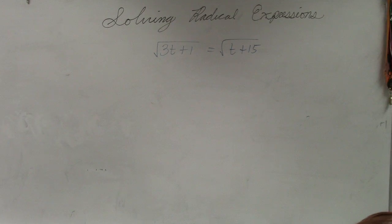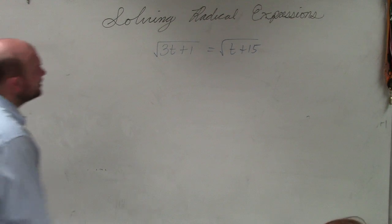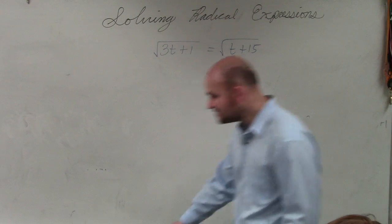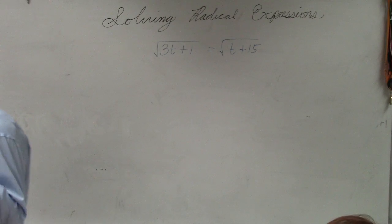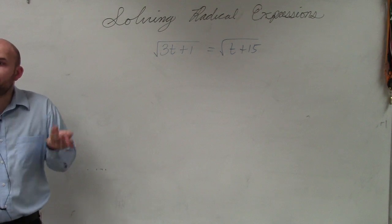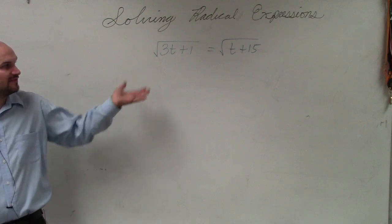So in this example, what we have here is the square root of 3t plus 1 equals the square root of t plus 15. Now in this case, you can see we have a square root on both sides. However, the main important thing is we have them isolated.